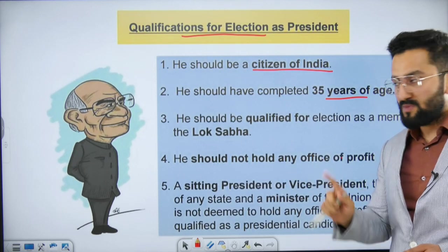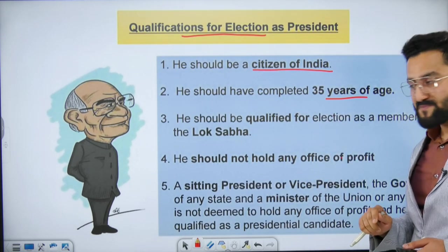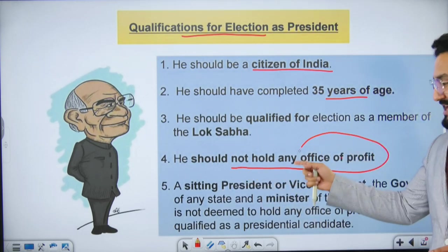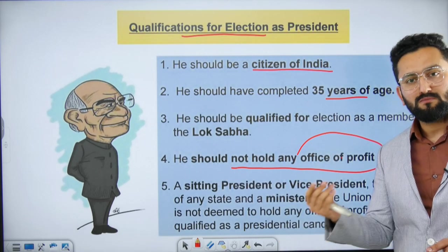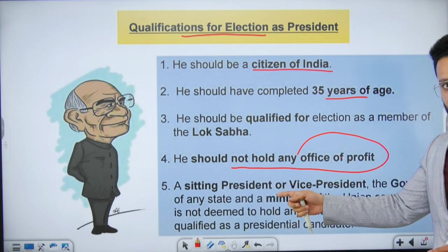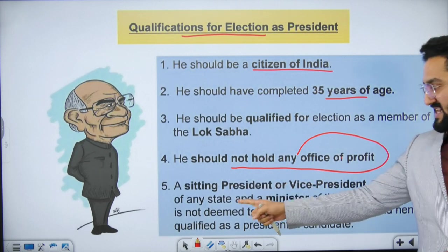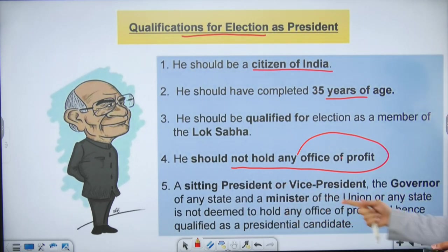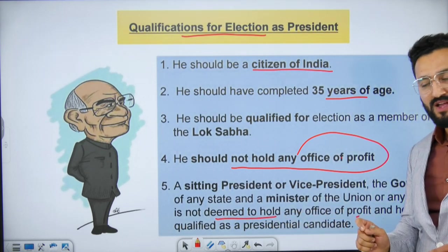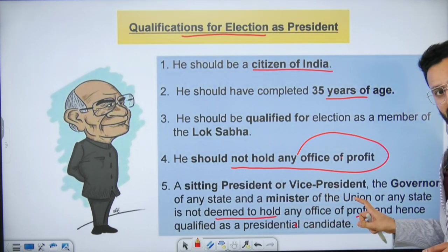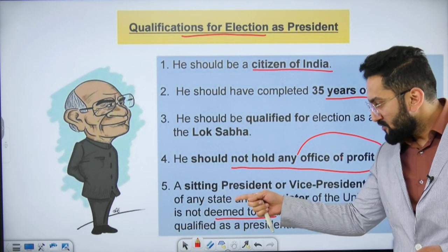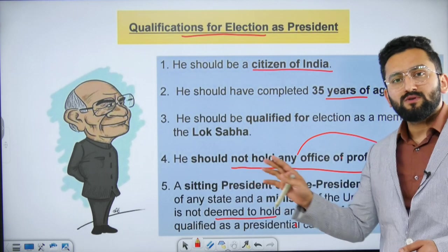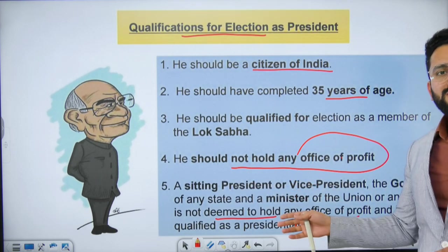One specific change: for Lok Sabha membership the minimum age is 25 years, but for President it is specifically mentioned as 35 years. The candidate should not hold any office of profit — meaning no government position from which they can draw remuneration. However, a sitting President, Vice President, Governor of any state, or Minister of the Union or any state is not deemed to hold an office of profit, so they can transition to become President without resigning.